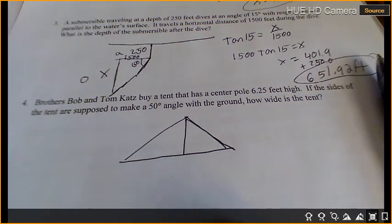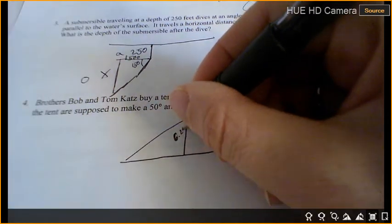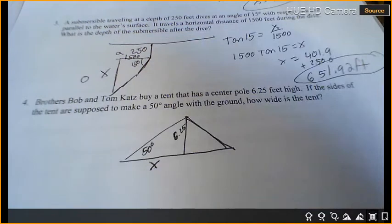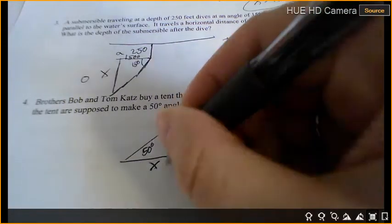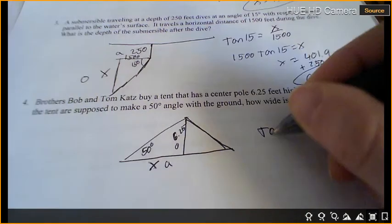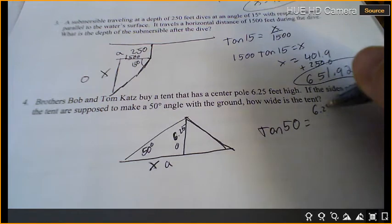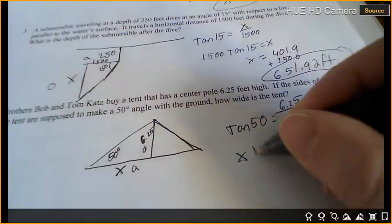Okay, so the center pole is 6.25, the degrees is 50. We're trying to find the width. So 6.25 is opposite, and x is adjacent, so we're going to use which trig function? Tan. So tan of 50 equals opposite 6.25 over adjacent x. We don't like the x in the bottom, but it's okay because we just times both sides by x.